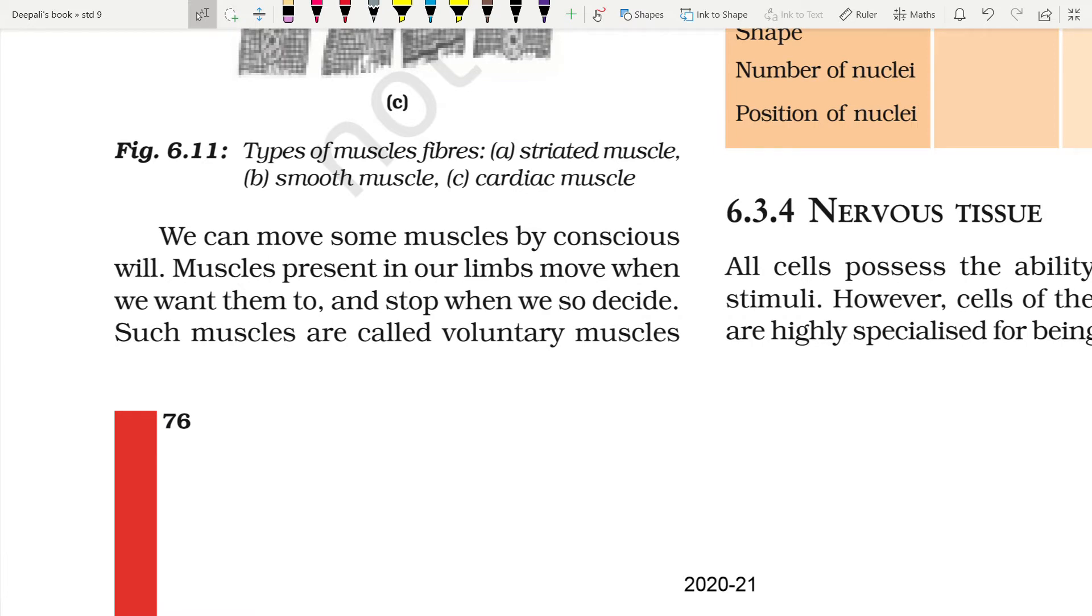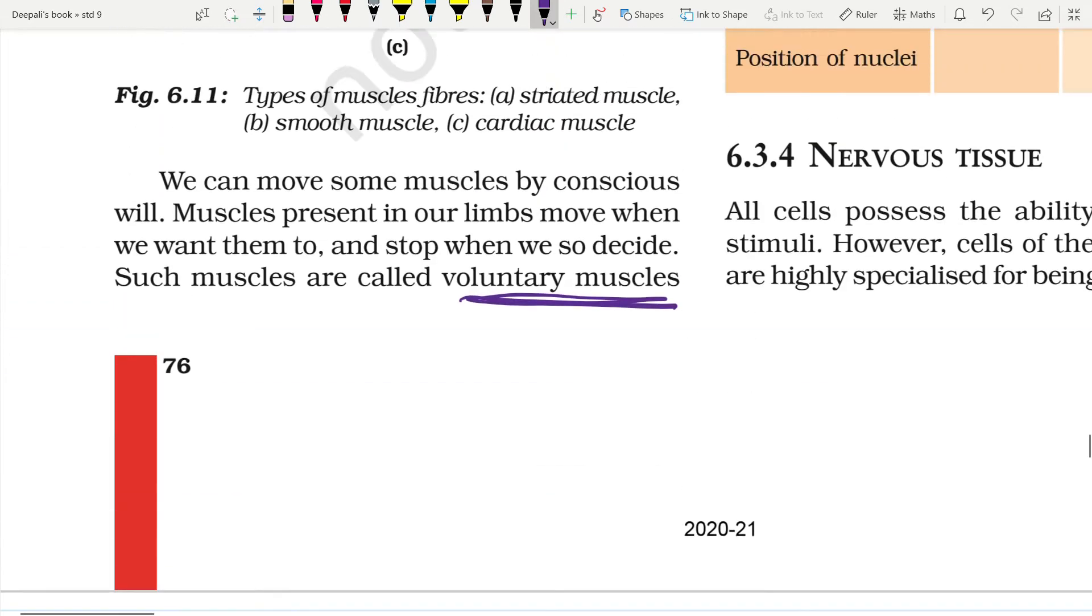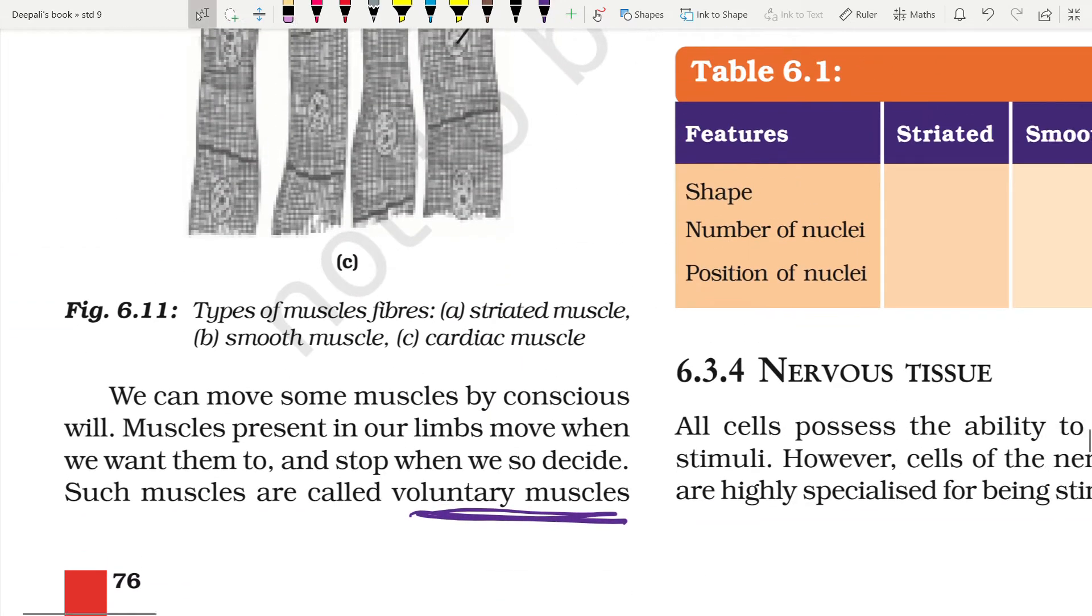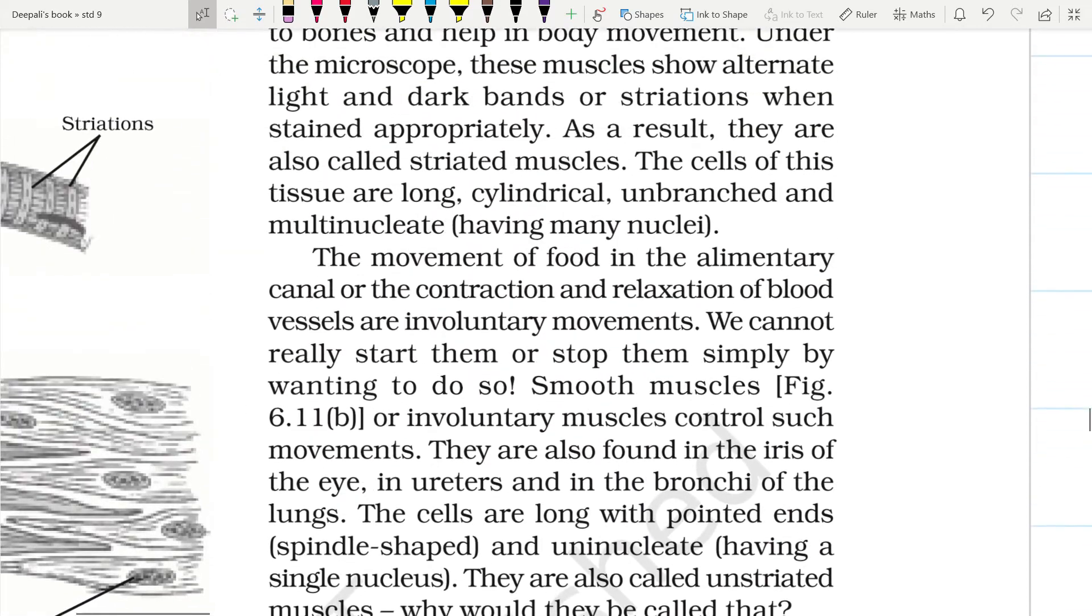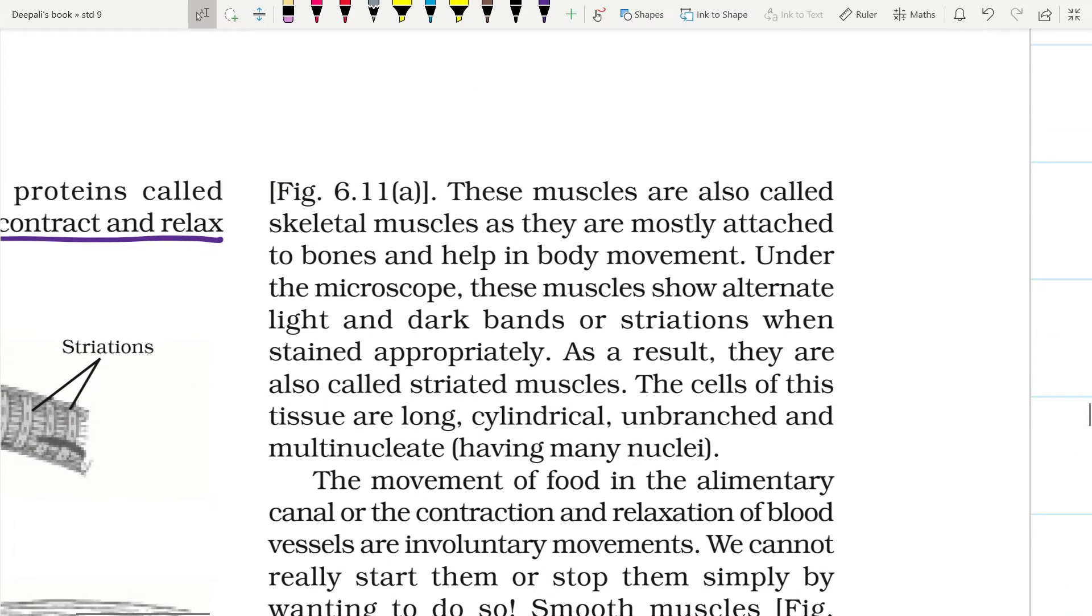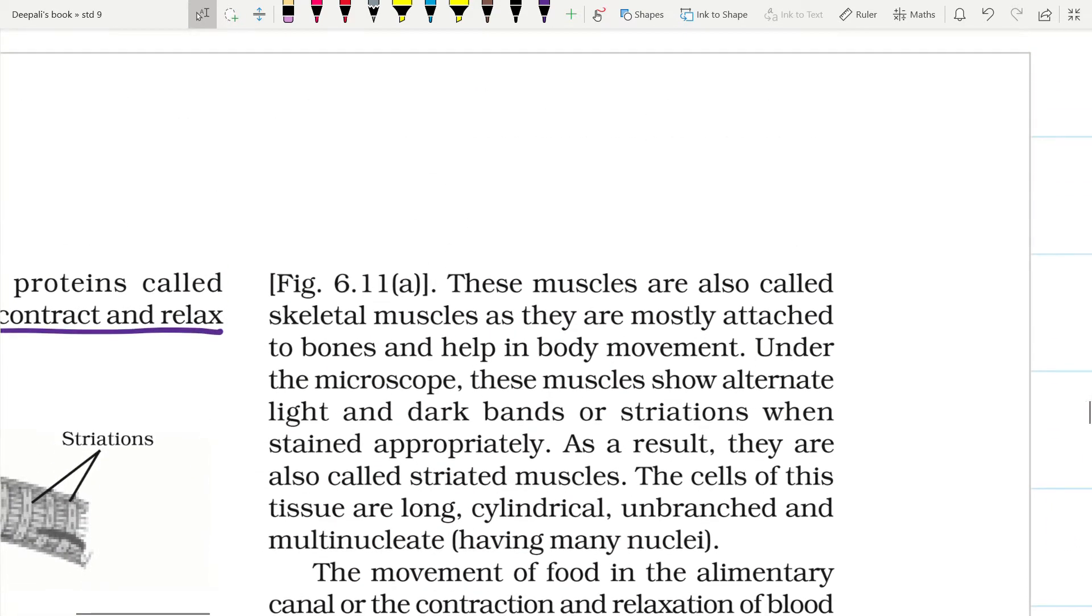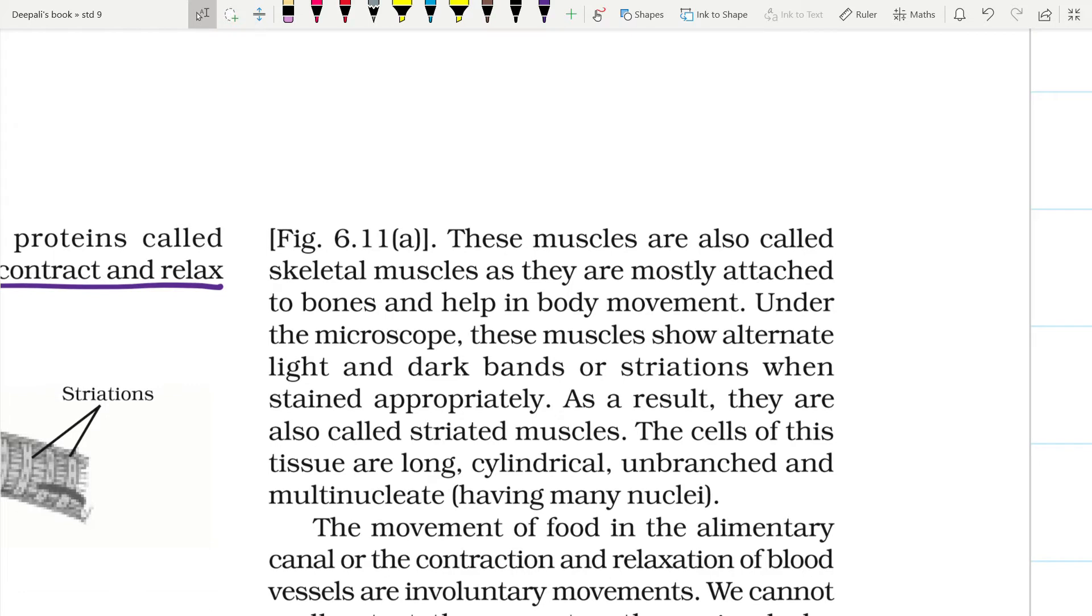We can move about some muscles by conscious will. Muscles present in our limbs move when we want and stop when we decide. Such muscles are called voluntary muscles. So the first classification of muscular tissue can be done as voluntary and involuntary. Voluntary means which can be easily controlled by our will or wish.